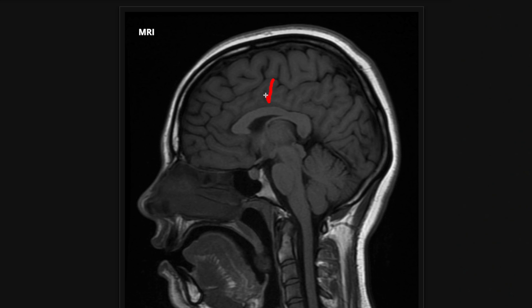First thing I look at is the corpus callosum. There are a bunch of different diseases that can affect the corpus callosum. Some people don't develop with a corpus callosum, and they have either dysgenesis or something called agenesis, where it doesn't exist entirely. So that's something to look at.